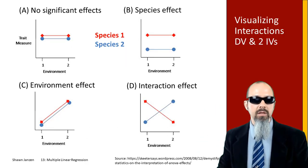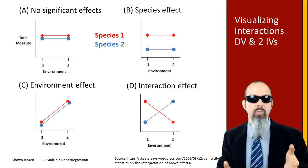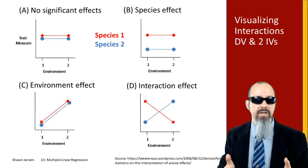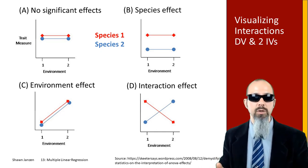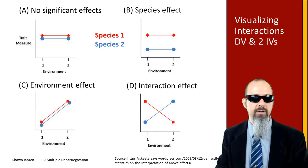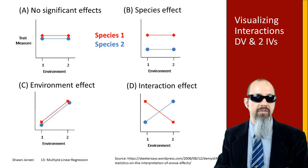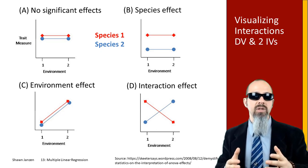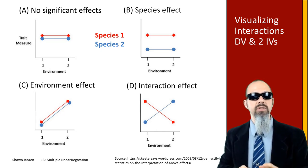Let's look at an example from biological studies where we have a dependent variable on the y-axis as some trait measure of species, and two different environments on the x-axis. The lines are colored by two different groups: species one and species two. In graphic A, there are no significant effects — both species have relatively the same means by species and by environment, and note the parallel lines. In B, there's a species effect — no real difference between environments, but the species are at two different levels. The lines are still parallel, so there's no real interaction.